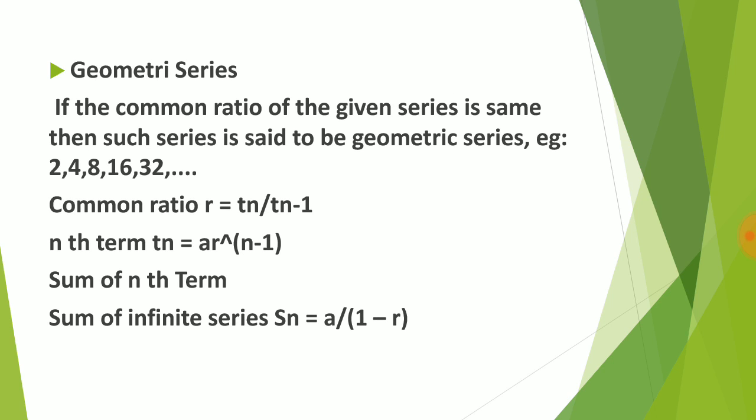In a geometric series, the common ratio is the same — found by dividing any term by the previous term. The nth term is a × rⁿ⁻¹. The sum to infinity is Sₙ = a / (1 − r), used when the last term is not given or the number of terms is unknown. There is another sum formula as well — make a note and then solve.